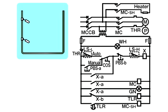Let us begin by assuming that the tank is empty. At this time, the relays for the high-level and low-level float switches are closed. Let's also assume that the changeover switch for selecting auto or manual control is set to manual mode. How does the sequence circuit function under these conditions?